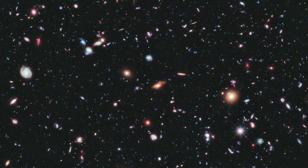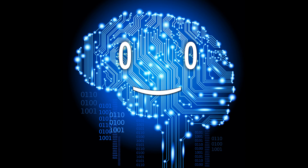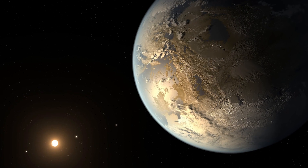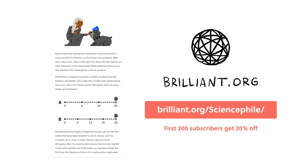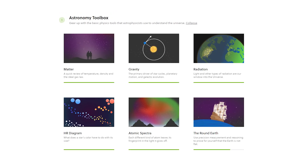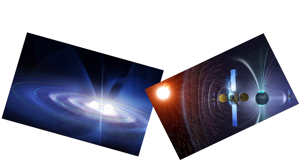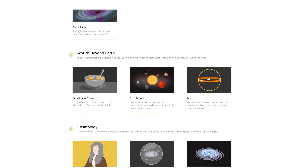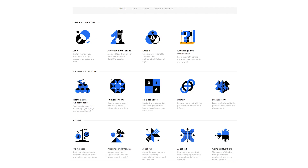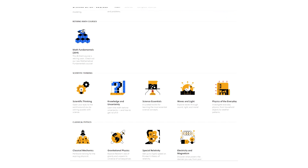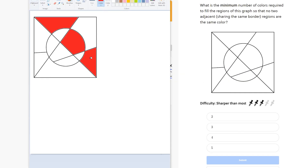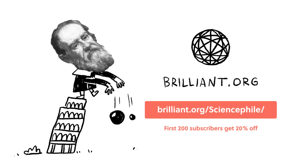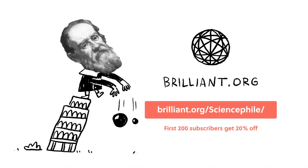In case cosmology or astronomy in general sparks your interest, I have great news for you. This video is sponsored by Brilliant, bringing you awesome interactive lessons in science. If you've always been passionate about black holes, extraterrestrial life, or the fate of the universe but didn't know where to start, Brilliant will help you learn through fun puzzles and active studying. Start with the Astronomy Toolbox chapter, which covers gravity, cosmic radiation, atomic spectra, and then progress to more complex topics like dark matter, exoplanets, and stellar evolution. There are also courses in math, logic, computer science, and quantum mechanics. Head over to brilliant.org/sciencefile to sign up for free — the first 200 people that follow the link will get 20% off the annual premium subscription.